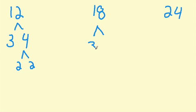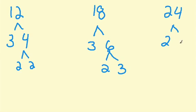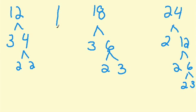For 18 I'll do 3 and 6. And 6 is 2 times 3. And 24. Let's do 2 and 12, 2 and 6, 2 and 3. Alright, let's do a little line here to separate these factor trees.